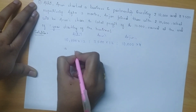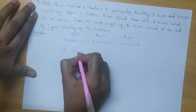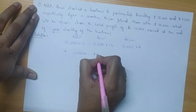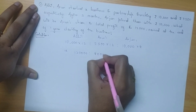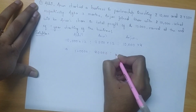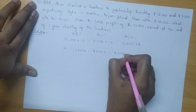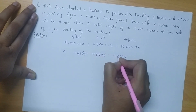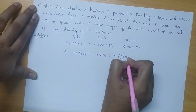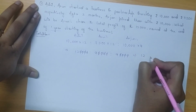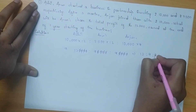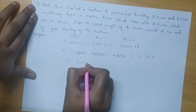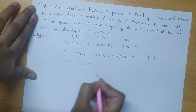On reducing, we get 1,20,000 is to 90,000 is to 90,000. On cancellation we get the ratio as 12 is to 9 is to 9, which can be further reduced to 4 is to 3 is to 3.